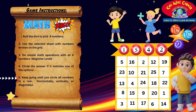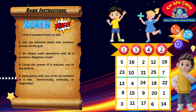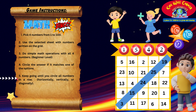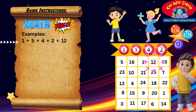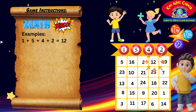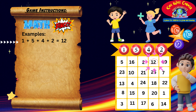We keep going until you circle all the numbers in a row. You can find them in a line going straight across, up and down, or even diagonally. Try to do the math quickly for all the numbers in a row. The faster you solve them, the more you become a math superstar and the winner of the game.